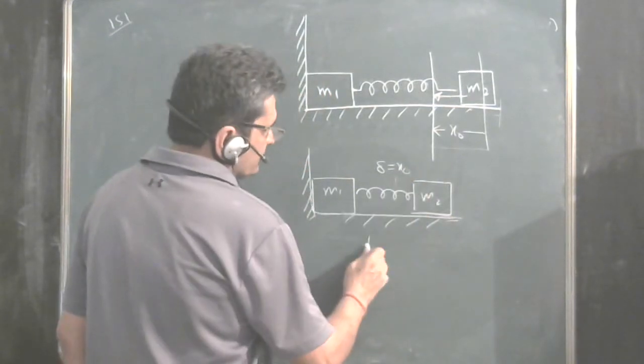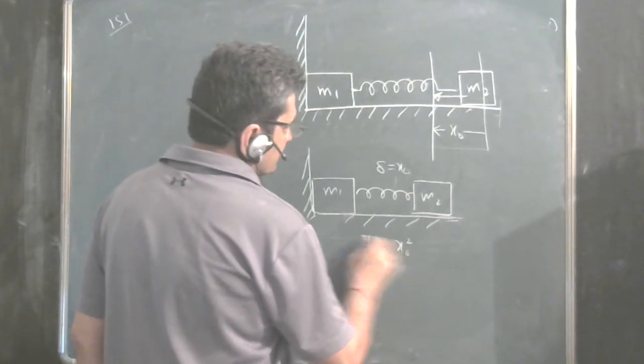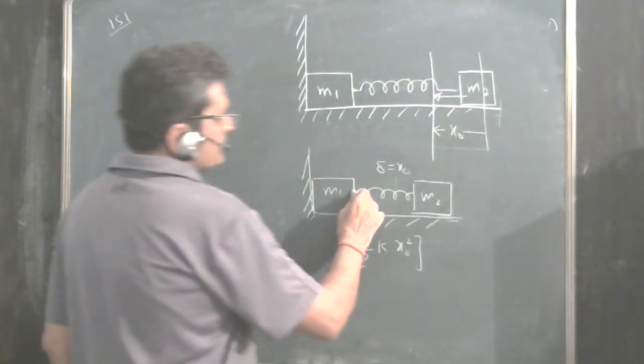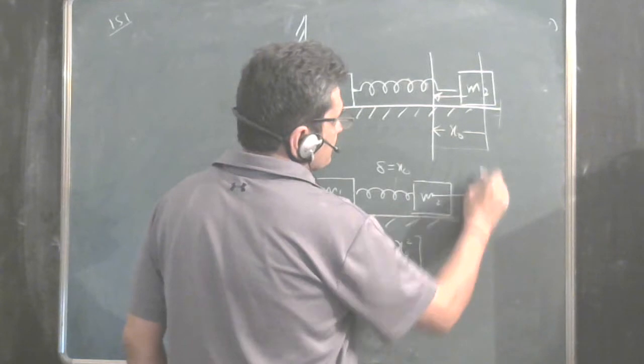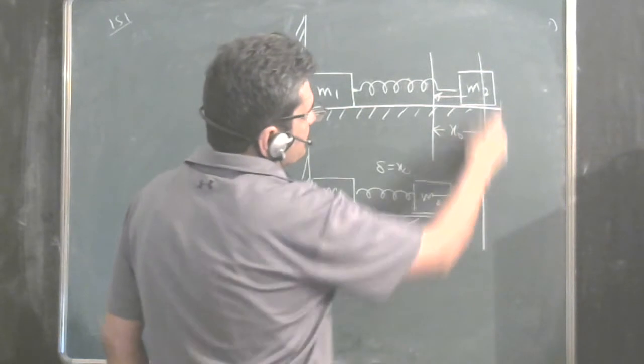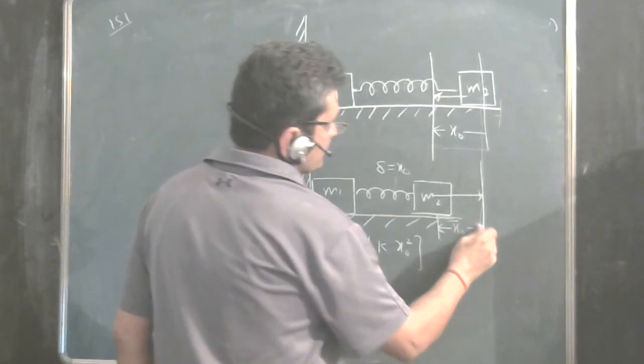There is energy stored in spring is half k x0 square. This energy will get released and this will start moving towards this direction. And when it comes back to the original position, that is when it gets displaced x0 again.